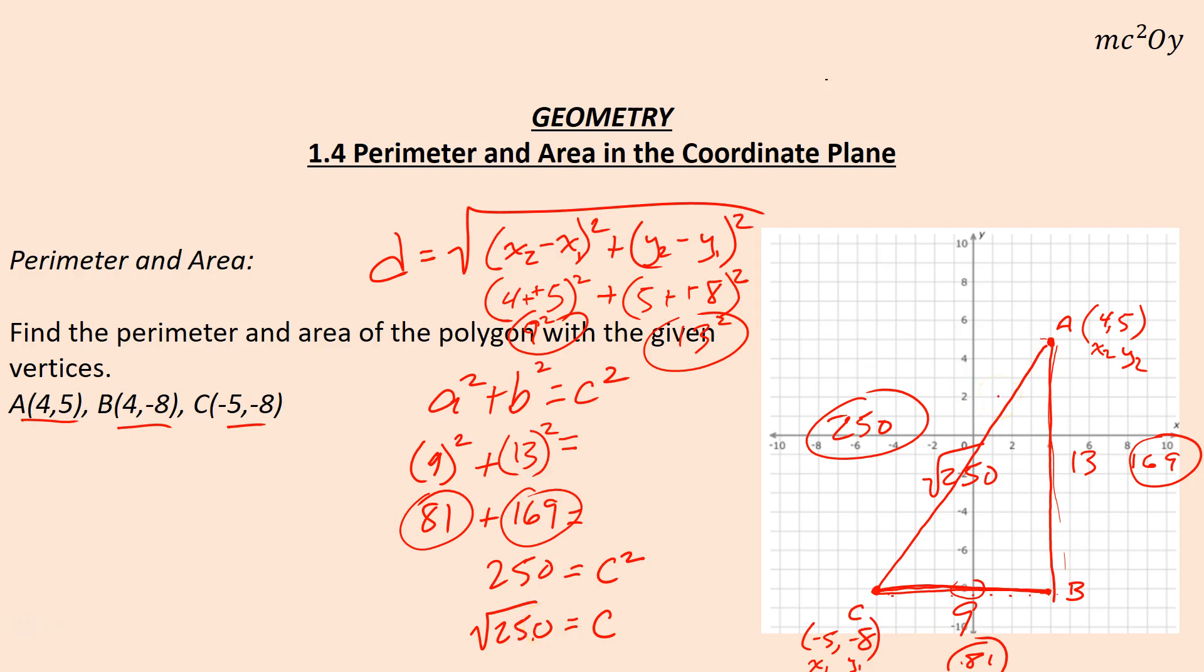Square root of 250 should be simplified if it says give the exact answer. I'm looking for perfect squares that go into it - in this case 25, which goes in 10 times. So √25 × √10. The perfect square is 25, root of 25 is 5, and root of 10 stays as 10. So c = 5√10. My perimeter here is equal to 13 + 9 + 5√10.